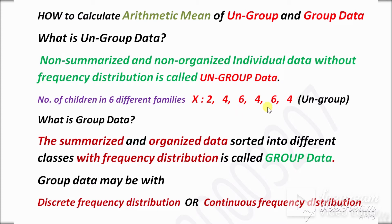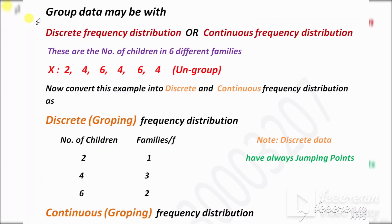Now, what is grouped data? Summarized and organized data sorted into different classes with frequency distribution is called grouped data. Here, grouped data comes with frequency distribution, while ungrouped data is without frequency distribution. So keep in mind: grouped data will always have frequencies.